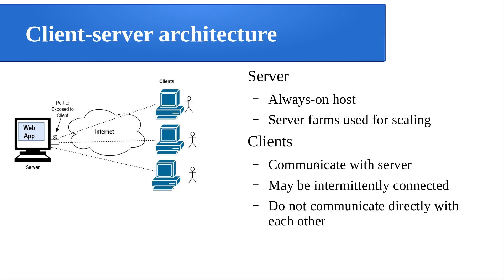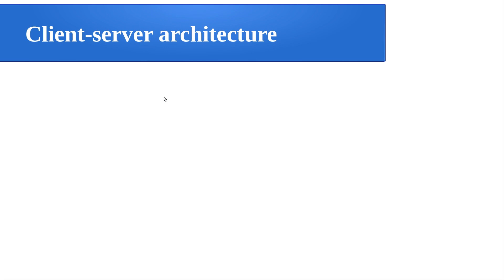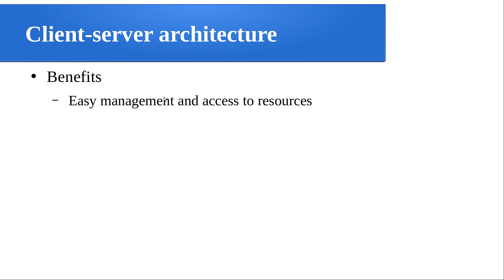Now what about the client? The client is something which communicates with the server — it may be intermittently connected and clients do not communicate directly with each other. So if two clients want to communicate with each other, that should be through the server. The benefits of this architecture include easy management and access to the resources, since all the resources reside at the server and clients can directly connect to that.